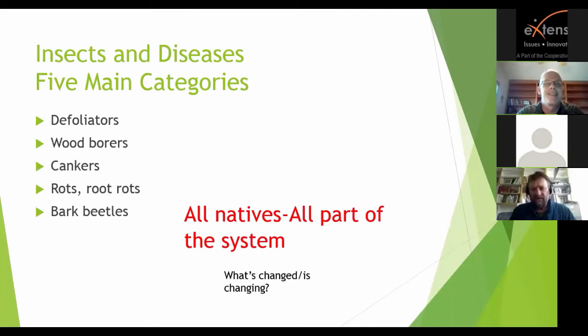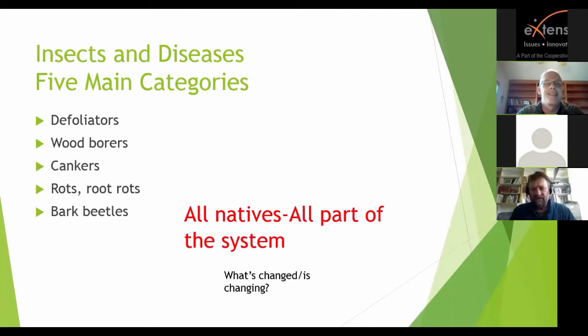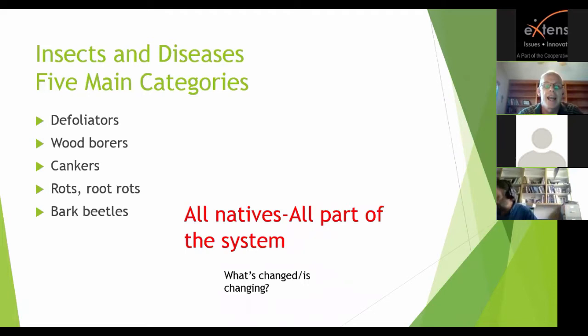I'm going to group Aspen insect diseases into five main categories: defoliators, wood borers, cankers, rots and root diseases, and bark beetles. One important point right at the start is that these are all native insects and diseases. They've always been part of the system and are quite often part of normal, healthy, functioning Aspen ecosystems. So the question in the back of my mind: if you see an increase in insect and disease activity, what's changed? What might be changing?